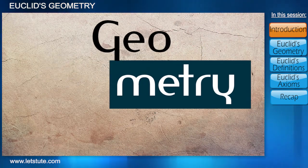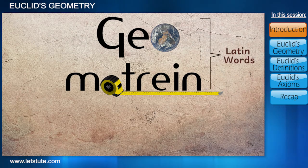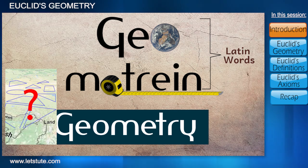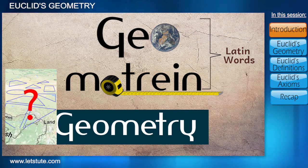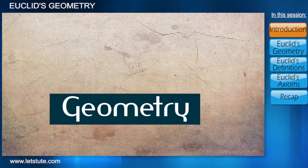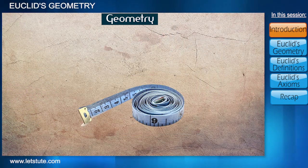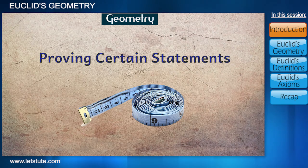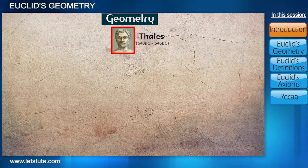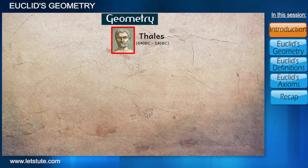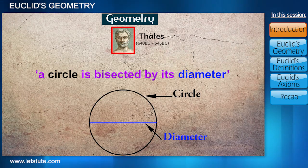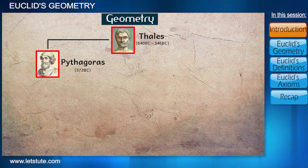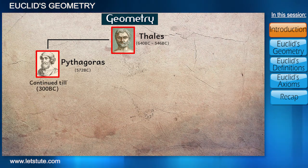Where 'geo' means earth and 'metrin' means to measure. But does geometry mean only measuring the land? No, it's far more beyond that as we all know now. Geometry isn't only about measuring things — it is also about proving certain statements. A Greek mathematician Thales was the first person to give a proof of the statement that a circle is bisected by its diameter. Pythagoras was one of his most famous pupils who did extensive work in geometry, which was continued till 300 BC.